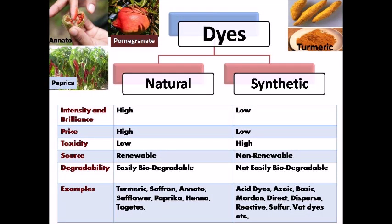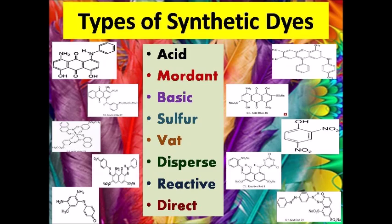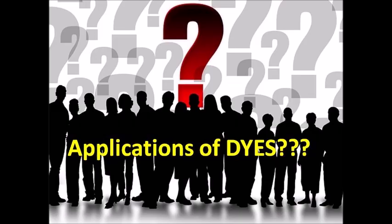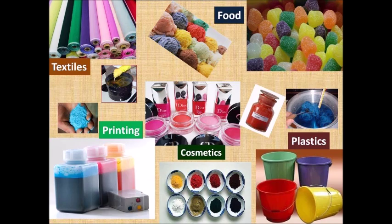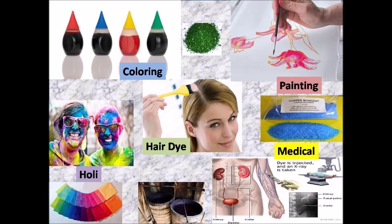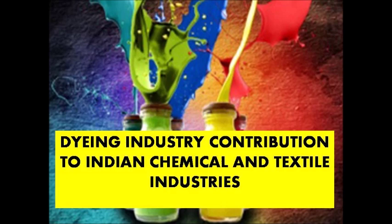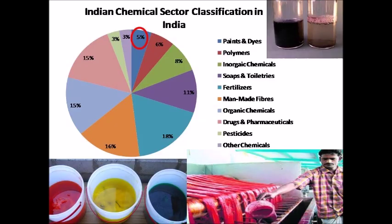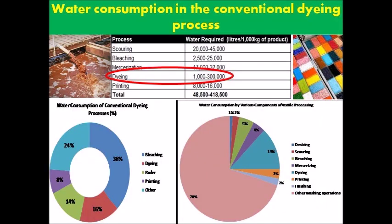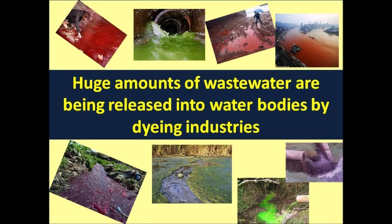Synthetic dyes replaced natural dyes because of their low cost. The natural versus synthetic dye differences are given in this slide. Synthetic dye types include acid, mordant, and others. Applications of dyes span food, textile, painting, cosmetic, plastics, colouring, medical, hair dye, and more. The dyeing industry's contribution to the Indian chemical and textile industries is 5%, and waste water used for the dyeing process is 1 to 3000 litres.